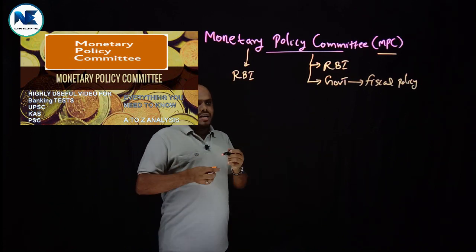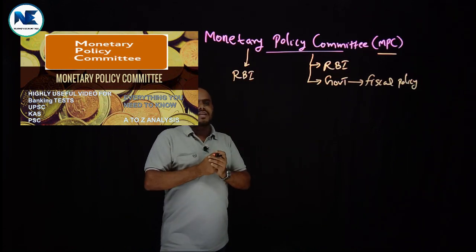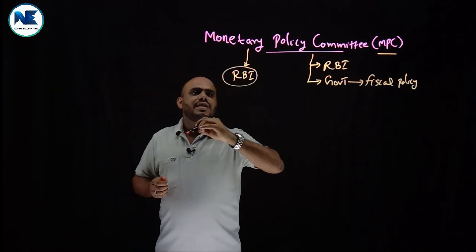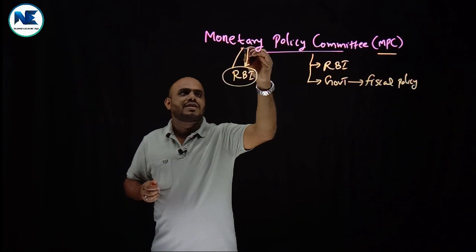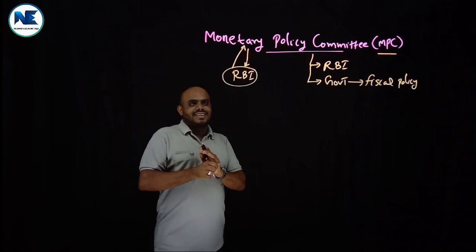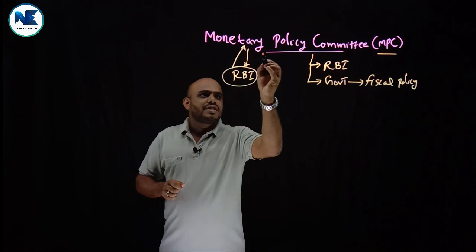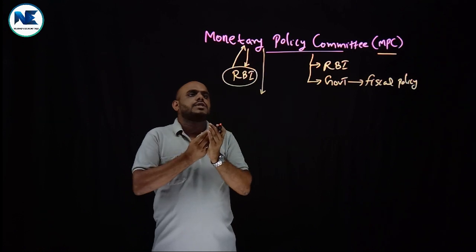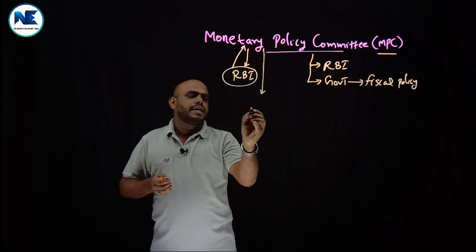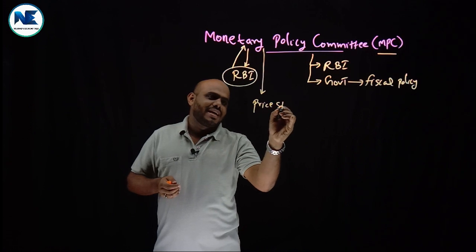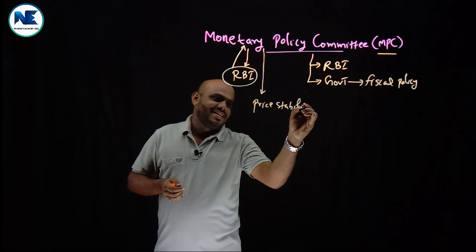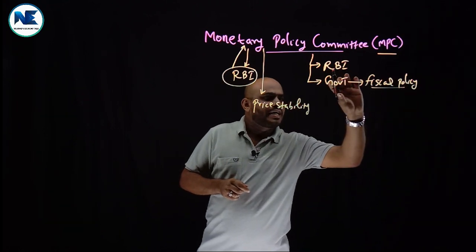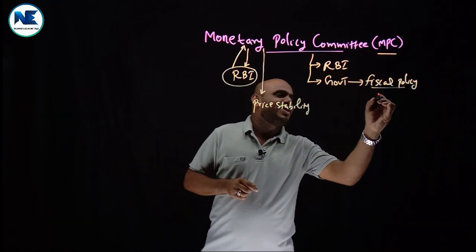I would like to explain some background of this topic. RBI has the authority to frame Monetary Policy. The primary objective of Monetary Policy is Price Stability. And the primary objective of Fiscal Policy, which is designed by the Government, is Economic Growth.